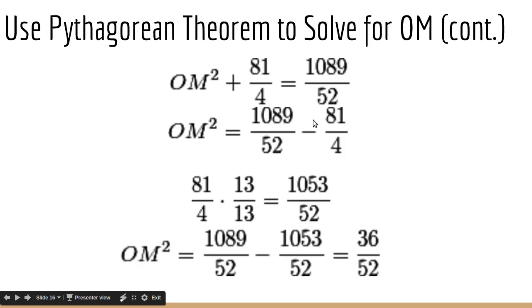And then 1089 over 52 for OB squared. So subtract both sides by 81 fourths to isolate OM squared. And then at this point, we need to convert 81 fourths into a fraction with a denominator of 52. Since the LCM of 52 and 4 is 52. So to do that, we multiply 81 fourths by 13 over 13, which is 1053 over 52. So 81 times 13 is 1053. Again, you just do that on paper. And then we substitute. So we get 1089 over 52 minus 1053 over 52. 1089 minus 1053 is 36. So you get 36 over 52. And that's OM squared.